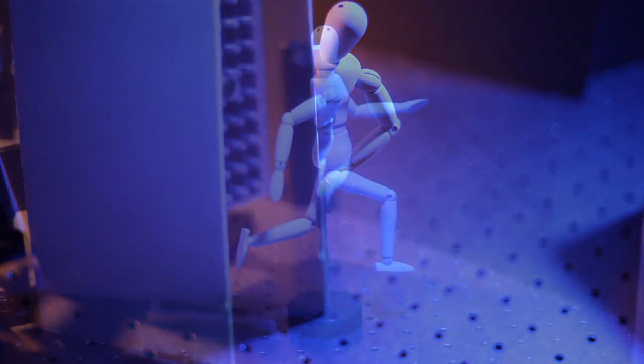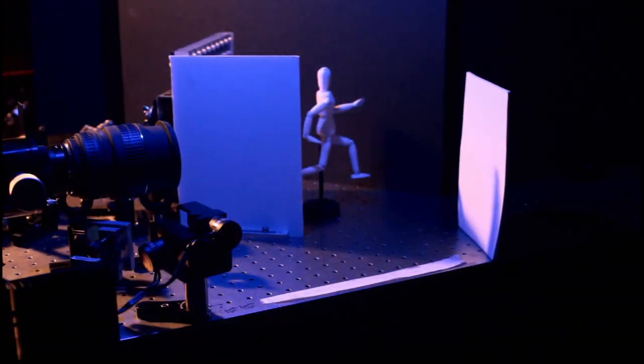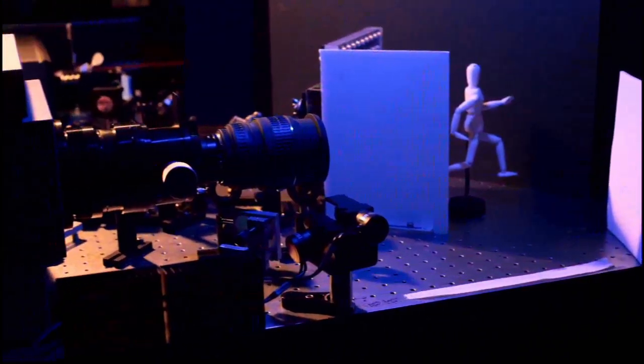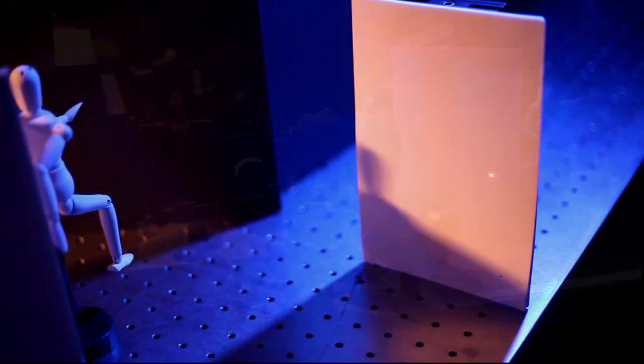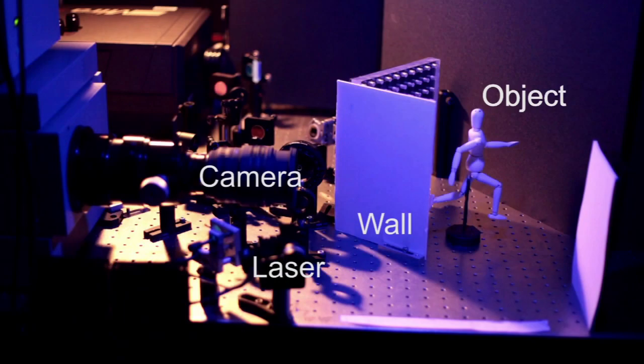Consider this toy mannequin. Currently, a wall blocks it from being illuminated and observed directly by the laser and the camera. Instead, light is scattered from a diffusely reflecting wall. Some of this scattered light then bounces from the object back to the wall and finally to the camera.